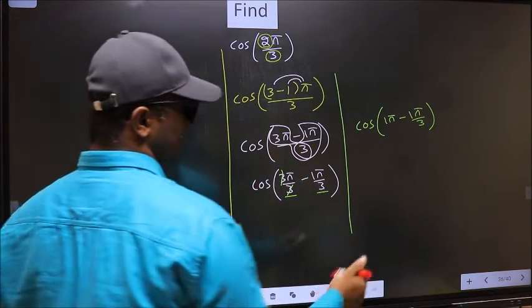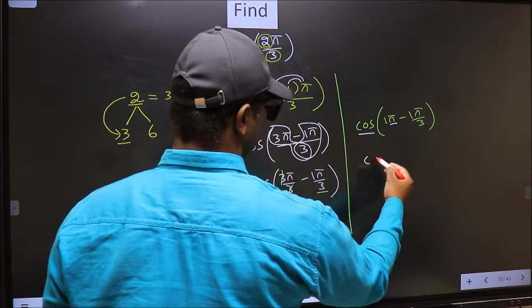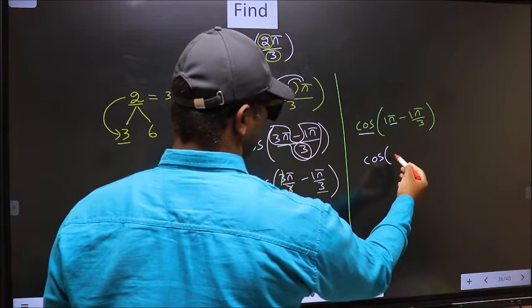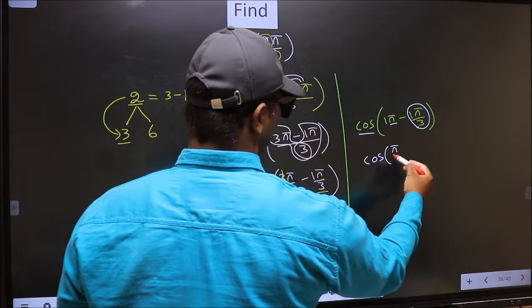Next, here we have π. So cos is not going to change. It will remain cos. And inside we get this angle π by 3.